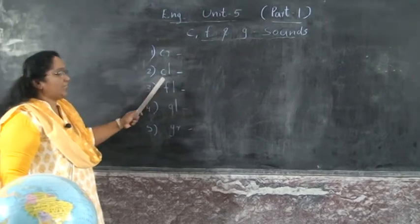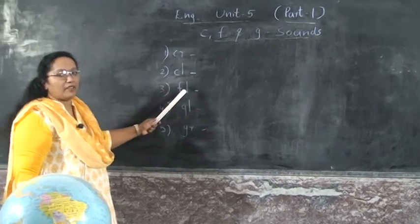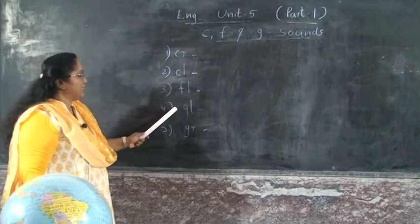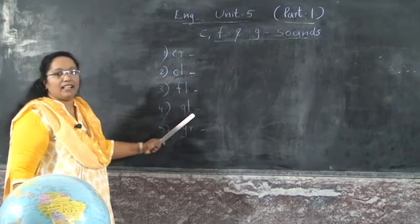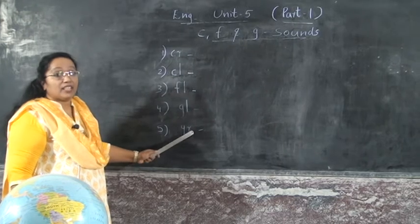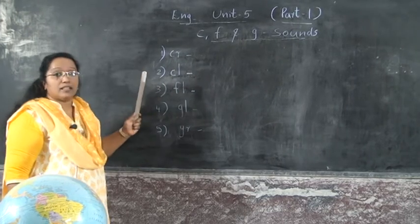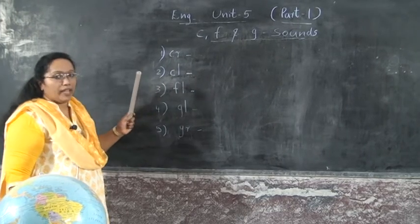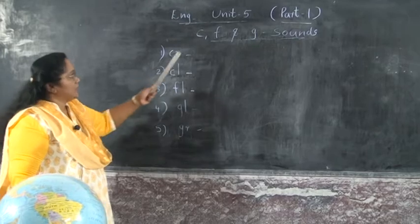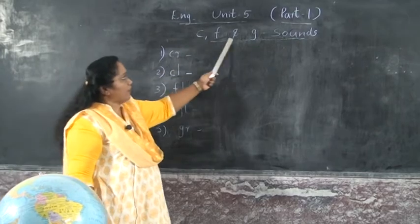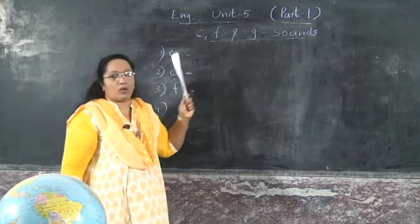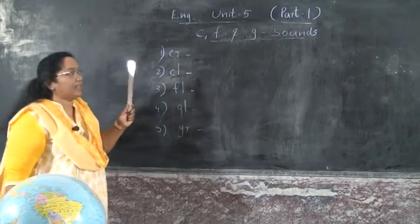We will study words starting with CL, FL, GL, and GR. CR makes the 'Kruh' sound. Okay. C, F, and G sounds.